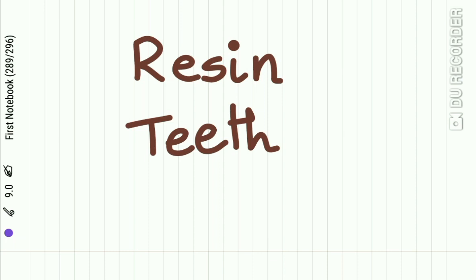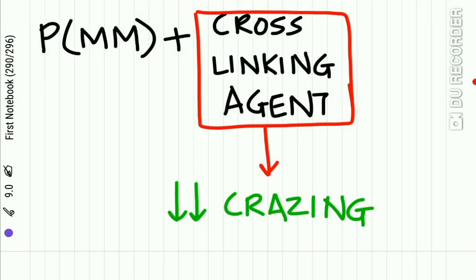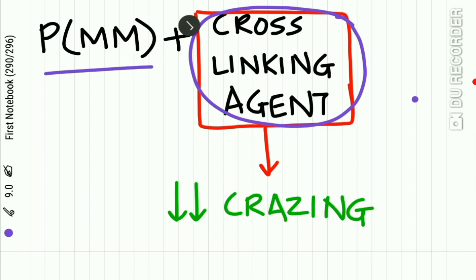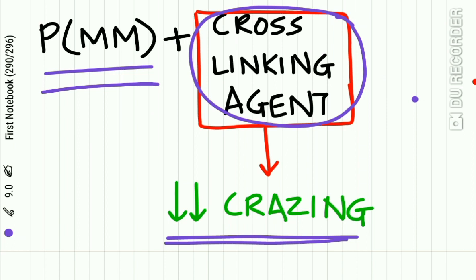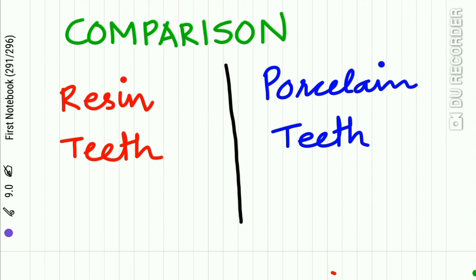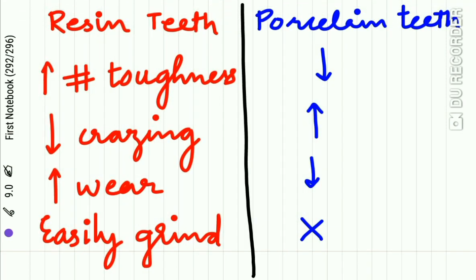Resin teeth are made up of polymethyl methacrylate polymer with a large amount of cross-linking agent. Adding more cross-linking agent results in decreased crazing. Now for the comparison between resin teeth and porcelain teeth — a very important exam question. Resin teeth have increased fracture toughness, while porcelain teeth have less fracture toughness. In resin teeth there is decreased crazing, while in porcelain teeth there is more crazing.